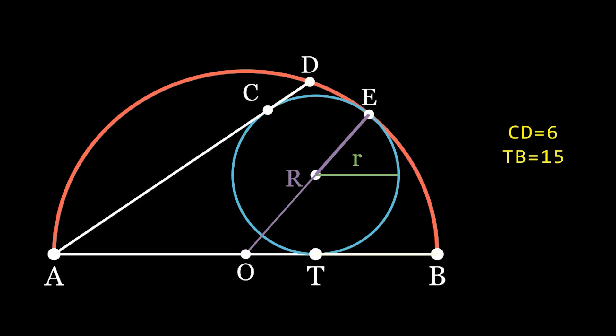We also see that AC and AT are tangents drawn to the blue circle from the same point, and considering that the TB segment is 15, both of those are equal to 2R minus 15.